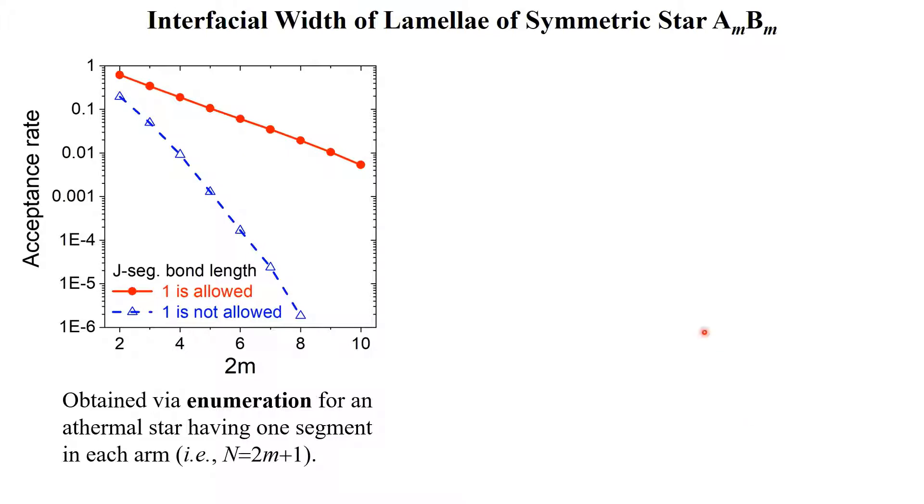Finally, with its large number of allowed bond vectors, our FBCC model can also be used to study branched chains such as star block copolymers. To demonstrate this, here we consider the lamellae of symmetric star block copolymers, where m A-arms and m B-arms are connected to the same junction segment J. To increase the mobility of this junction segment, we allow its bond length to also be 1, which greatly increases the acceptance rate for moving it.